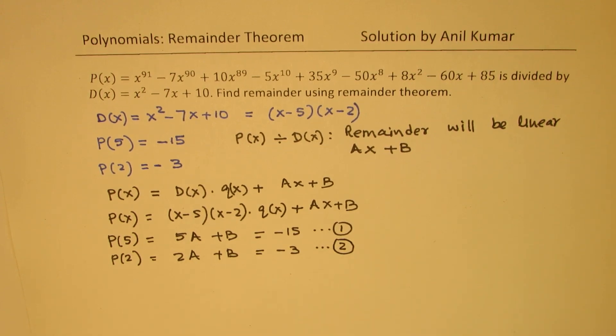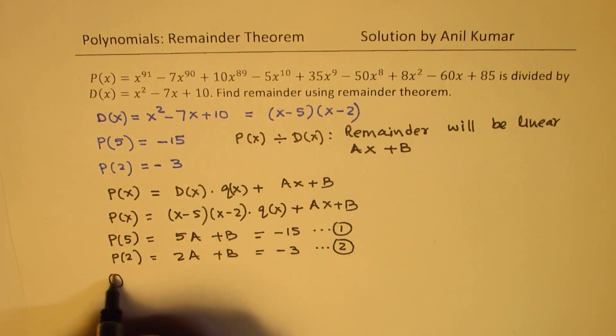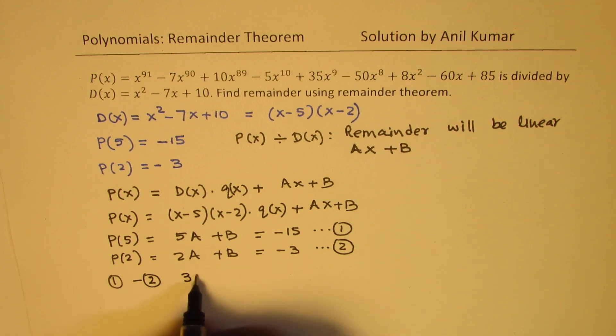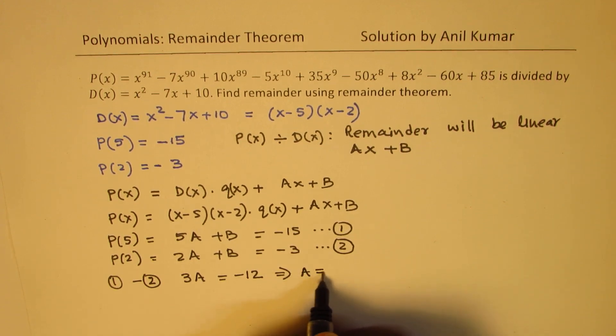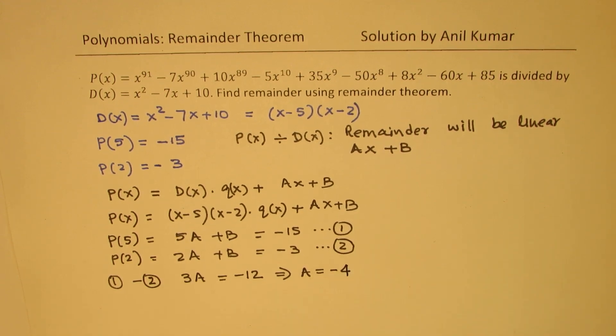Now clearly, we have two variables and two equations. Now if I do equation 1 minus equation 2, then we get 3A equals to minus 15 minus 3 gives us minus 12, and that gives you the value of A as equal to minus 12 divided by 3, which is minus 4.